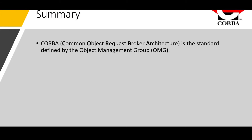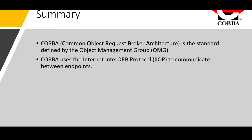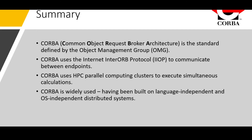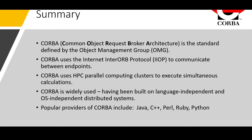In summary, CORBA — Common Object Request Broker Architecture — is the standard defined by the Object Management Group, or OMG. CORBA uses the Internet Inter-Orb Protocol, or IIOP, to communicate between endpoints. CORBA uses HPC parallel computing clusters to execute simultaneous calculations. CORBA is widely used, having been built on language-independent and OS-independent distributed systems. And popular providers of CORBA include Java, C++, Perl, Ruby, and Python.